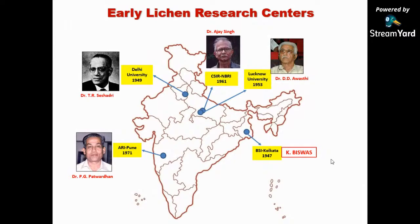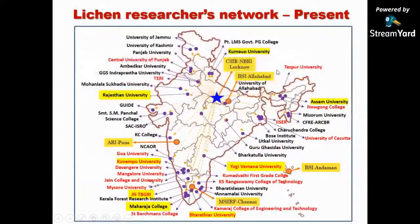At present there are about 100-plus lichen researchers working here and there in the country. They are all connected to us, and we are giving them a kind of support for carrying out lichen research. Sometimes their students come to NBRI for training, and sometimes we go there with technical support and other resources.